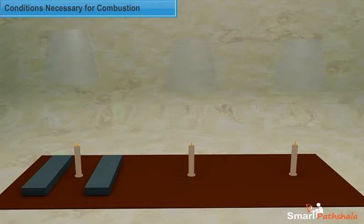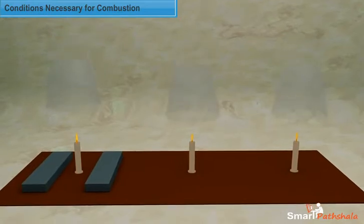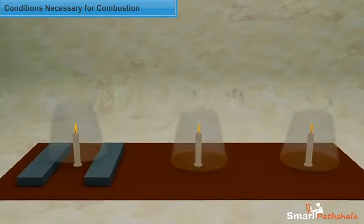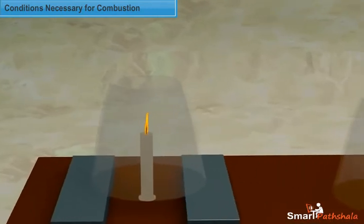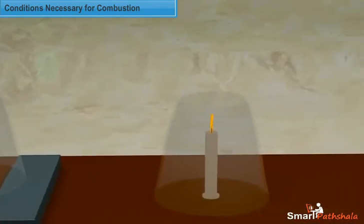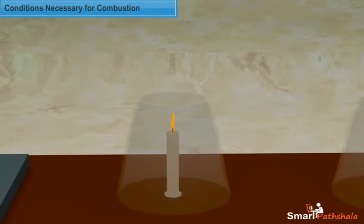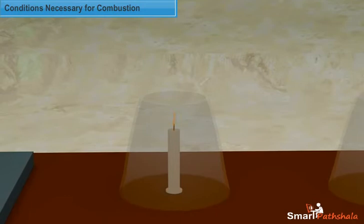Take a candle and light it. Now, place the candle on a flat surface and place two wooden blocks on either sides of the candle and place a glass chimney on the wooden supports. We find the flame continuing to burn due to the flow of air from below the chimney.